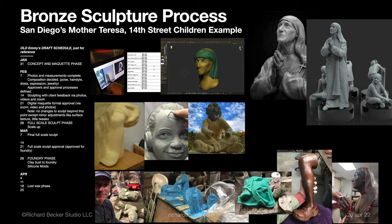Once I get to this level of approval, I try to get the sculpt really tight. Then I send the 3D files off to be machined in foam — they use surfboard-type foam. They have more detail than shown here, depending on what you pay for. Anyway, I get this foam back full size and start my first physical sculpting in foam and clay.